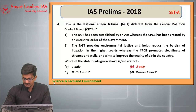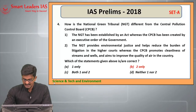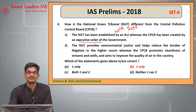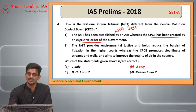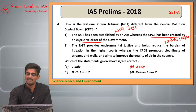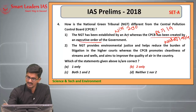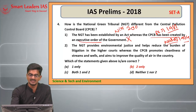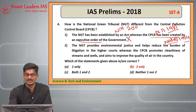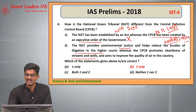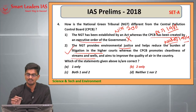Question number four: the difference between the National Green Tribunal (NGT) and the Central Pollution Control Board (CPCB). NGT was established by the NGT Act 2010. However, CPCB is not created by executive order — it is also a statutory organization established under the Water Act 1974, with powers granted under the Air Act 1981. The first statement is therefore wrong. The second statement — that NGT provides environmental justice and helps reduce the burden of litigation in higher courts — is correct. Answer: B, two only.